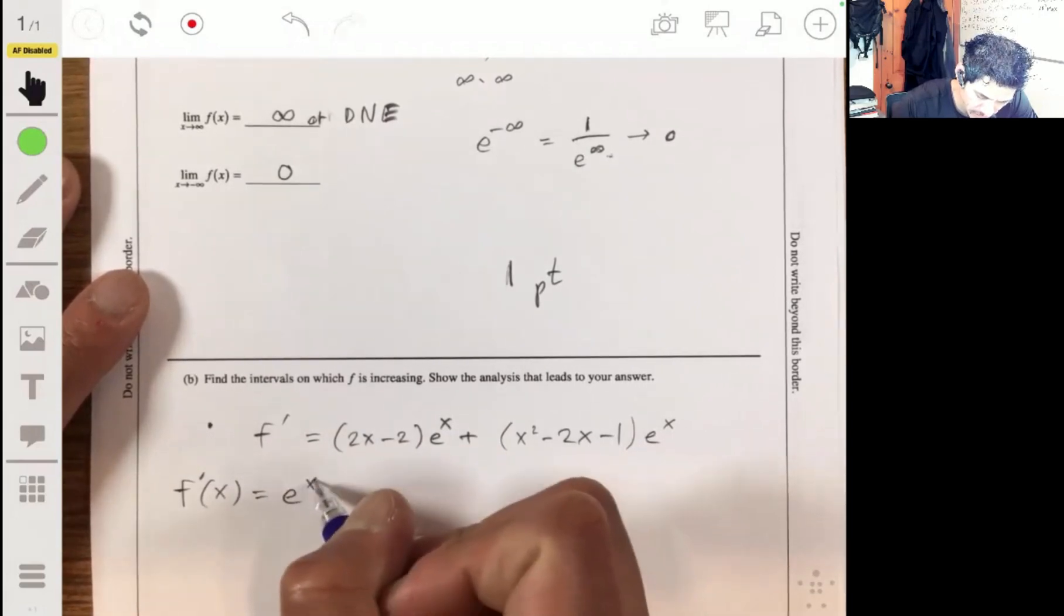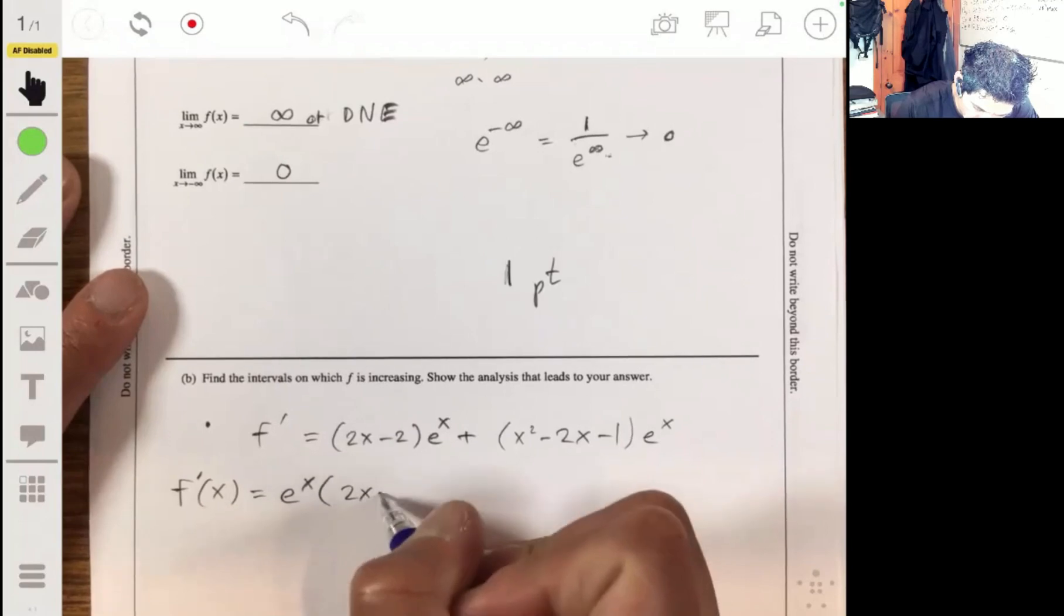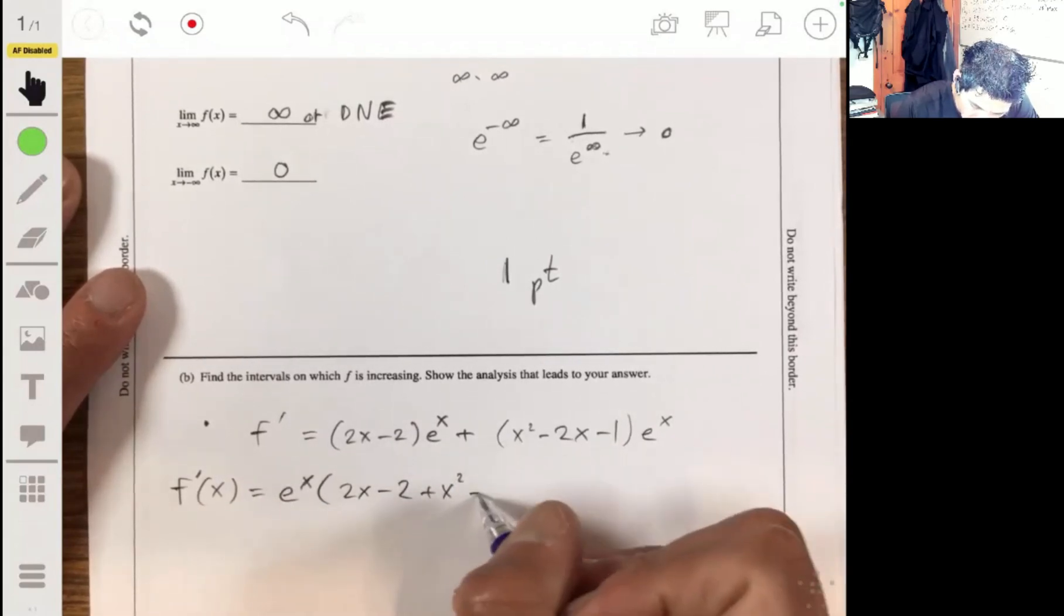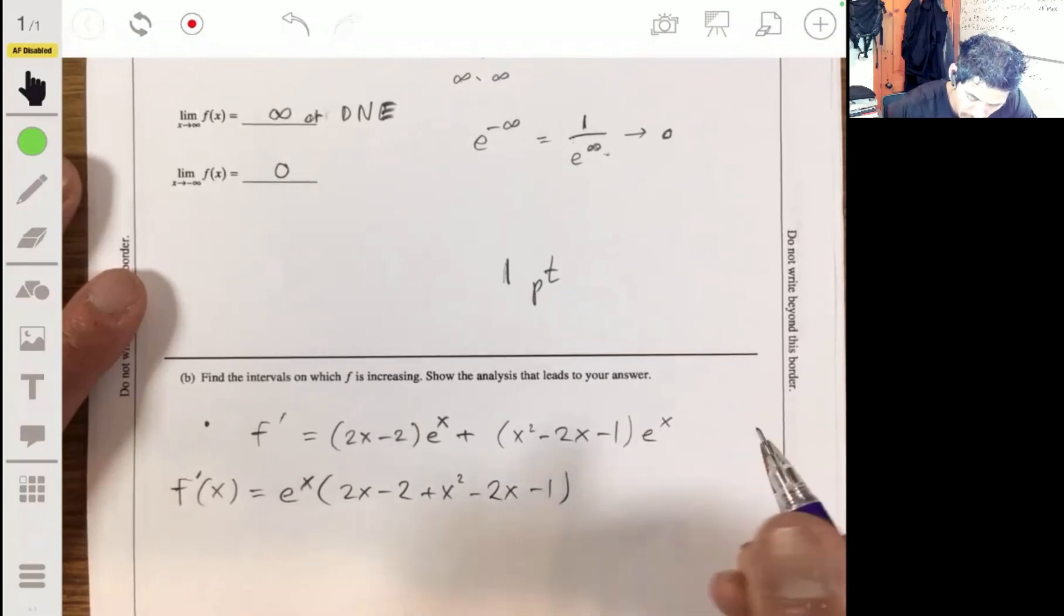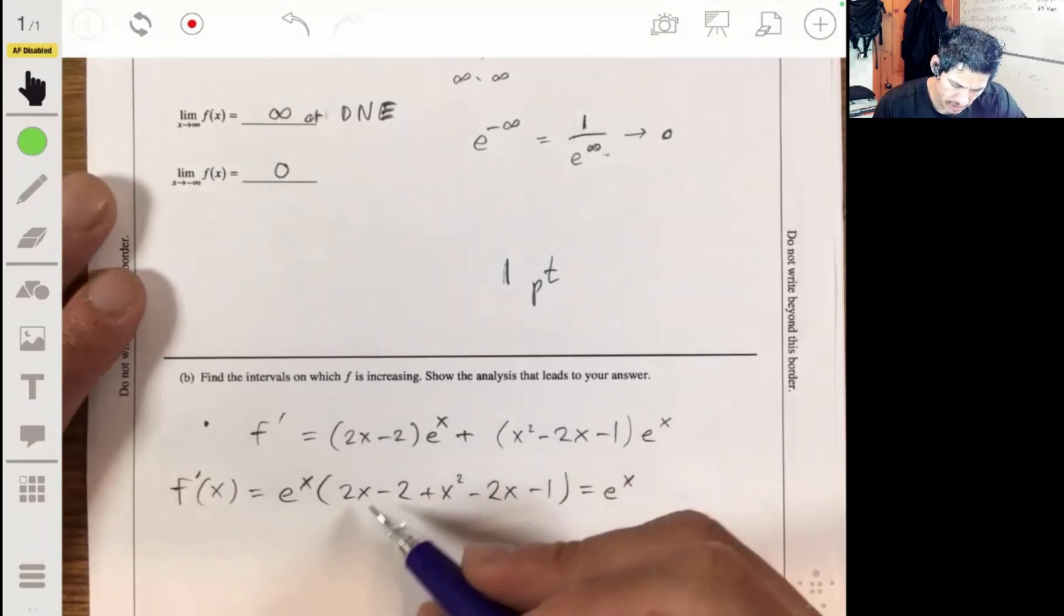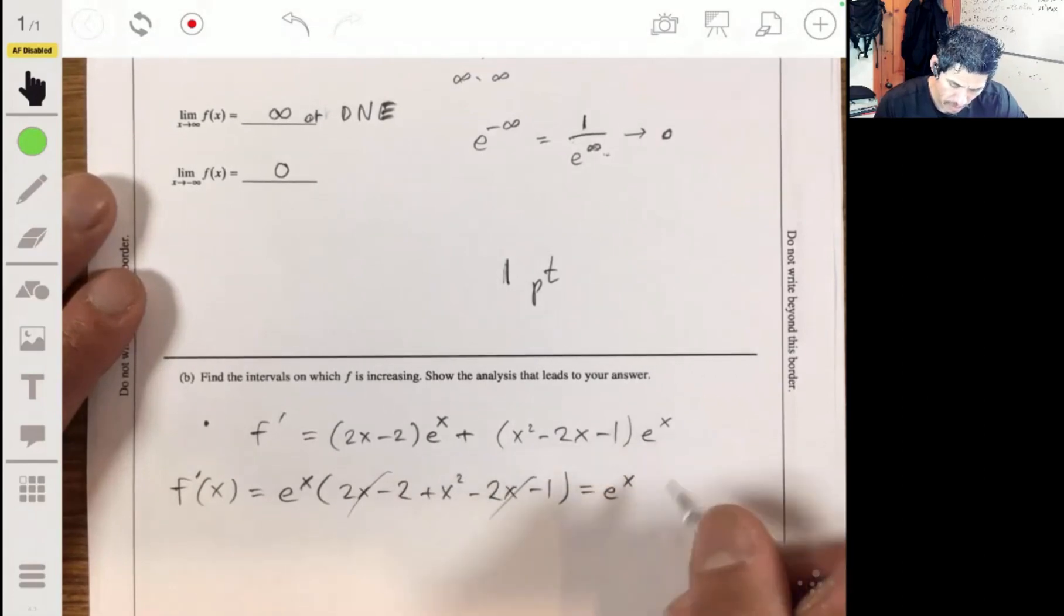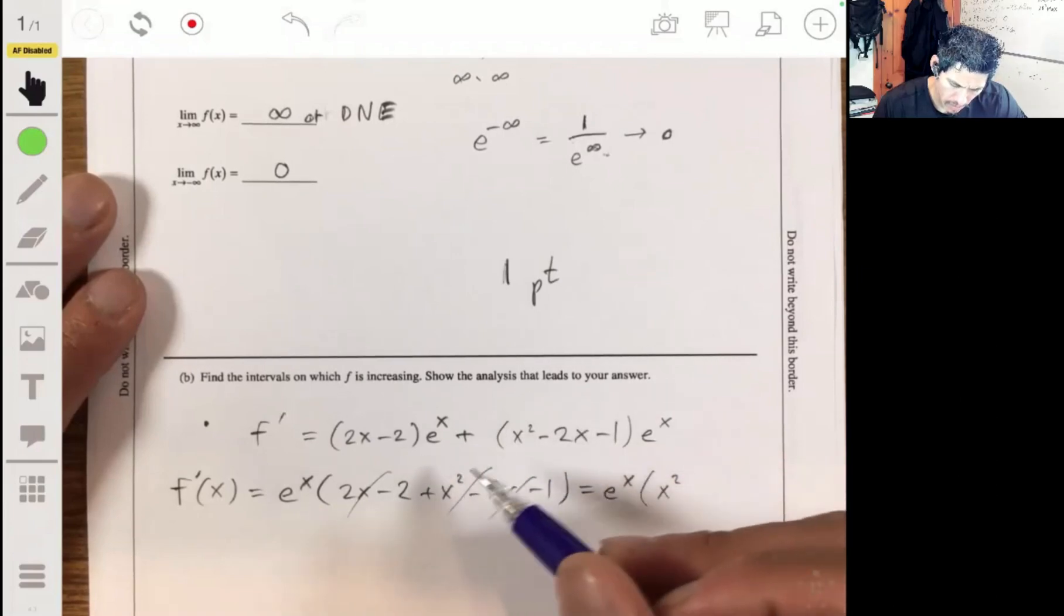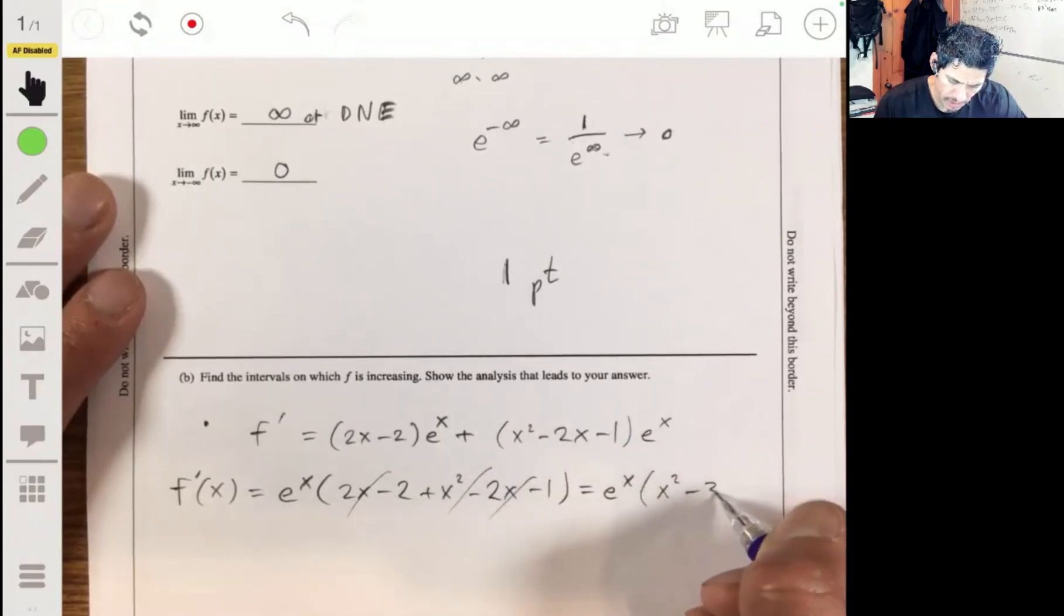Now we can probably just combine them and make them more clean. Factor out the e to the x, 2x minus 2, plus x squared minus 2x minus 1, so we get e to the x. These two x's cancel, times x squared minus 2 minus 1, so minus 3.